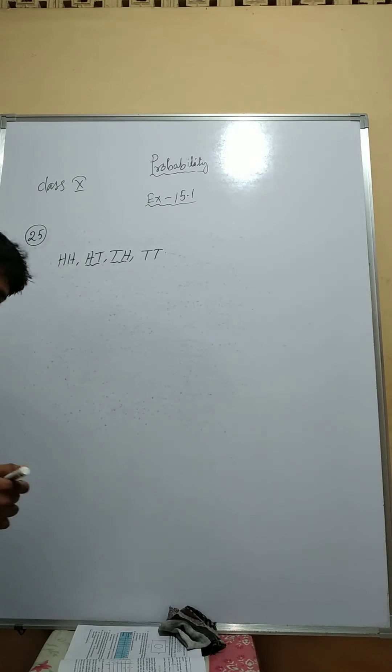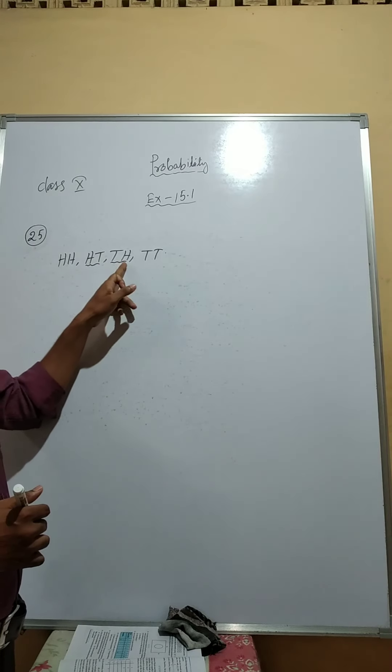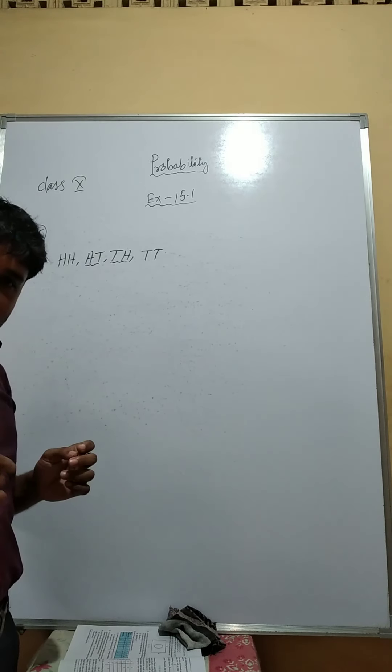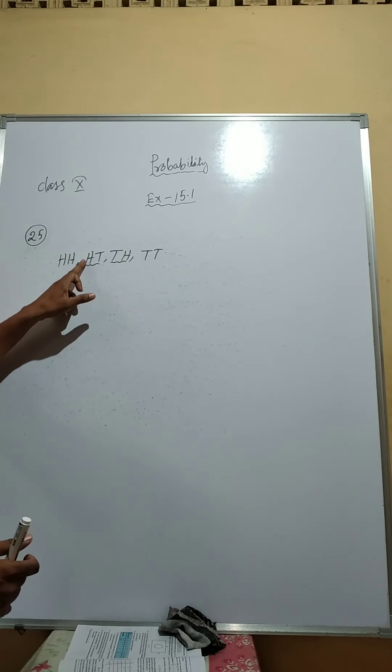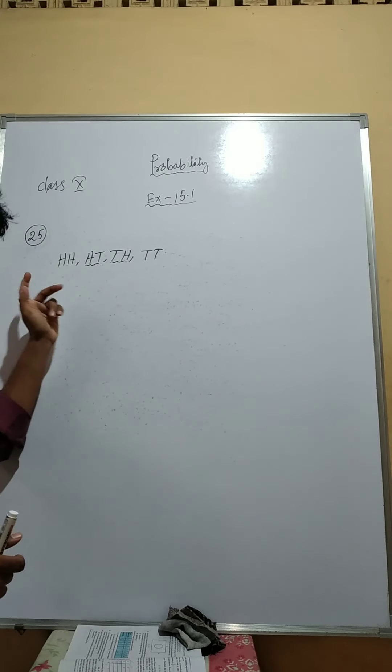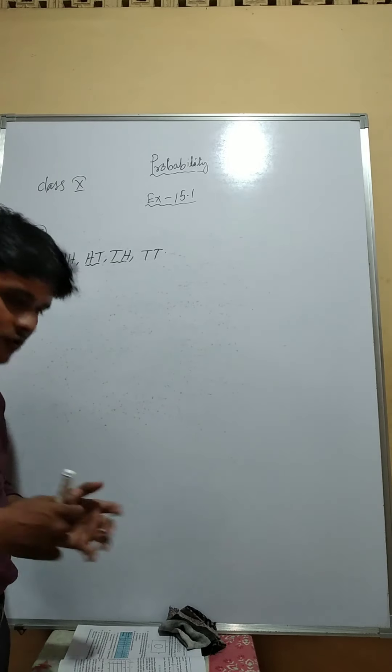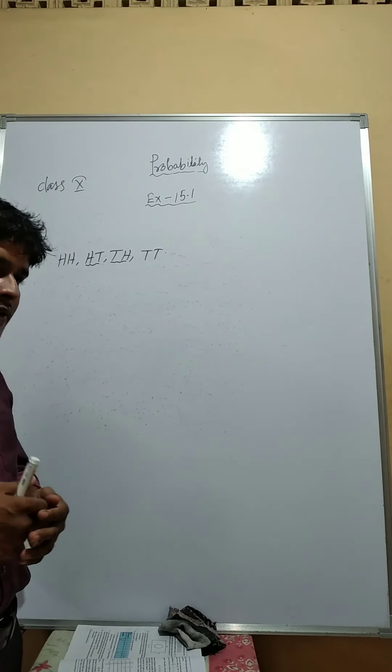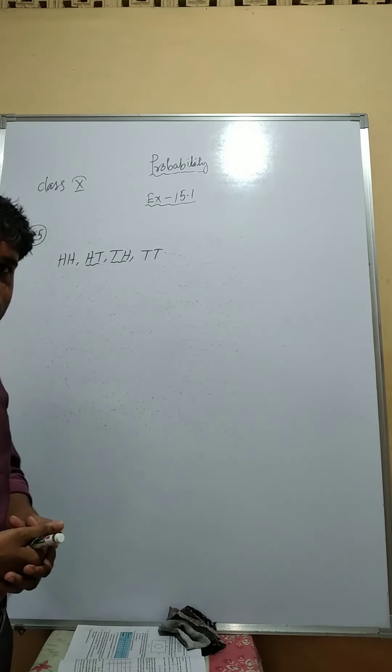But from the given information, you cannot say this head-tail and tail-head are equally likely outcomes. Because the difference is, two coins if you toss simultaneously, then this result will come. This one is head from the first coin, tail from the second coin. And here, tail from the first coin and head from the second coin. In this question, there is no information that you can say the first coin will give 10 times head and 10 times tail. It is not clear.